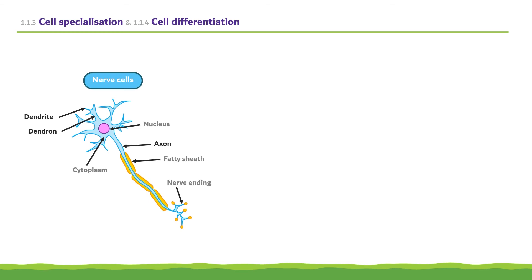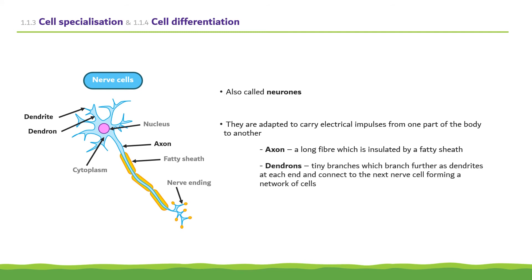Another specialized animal cell are nerve cells. They are also called neurons and are adapted to carry electrical impulses from one part of the body to another. The axon within the nerve cell is a long fiber which is insulated by a fatty sheath to aid in faster conduction of electrical impulses. Dendrons are tiny branches at one end of the nerve cell which branch further into dendrites. These connect to the next nerve cell forming a network of cells.